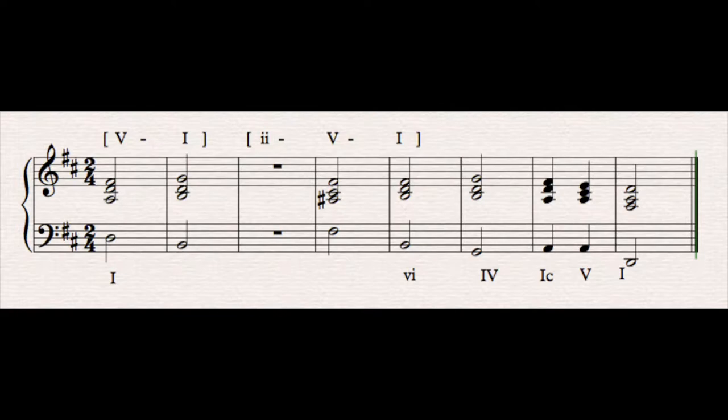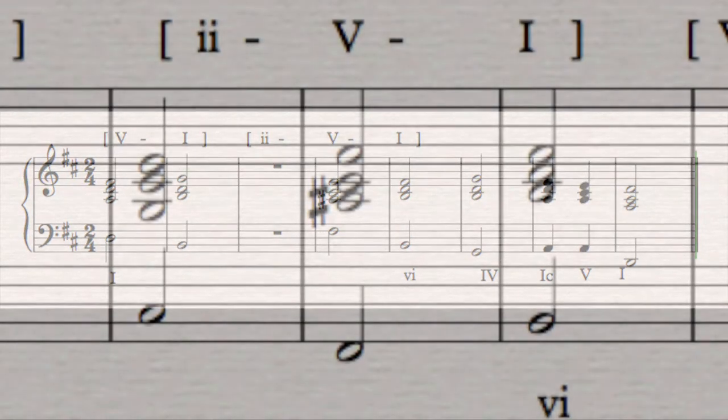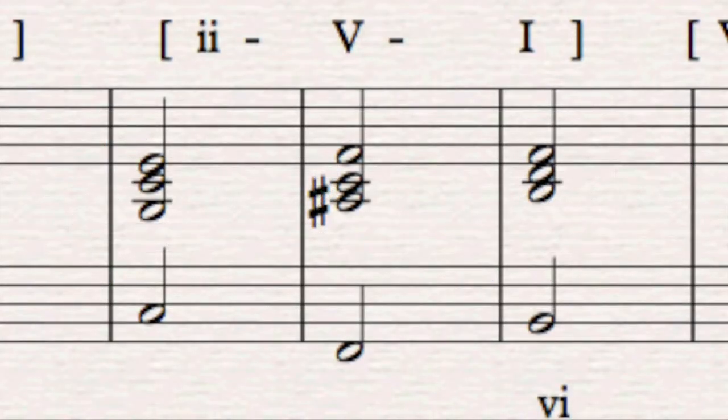Now we've already established a dominant-tonic movement in bars four to five. But if we treat bar four now as a tonic, we can precede it with a C sharp chord, a chord built on C sharp. And in this case it will be a C sharp diminished chord. So bars three, four, and five now act like a two-five-one progression in B minor. I know this is going to be tricky for some of you, but just follow it through. I think you'll get to understand that we're simply just finding opportunities within the chord progression to have some dominant-tonic movement, some chord five to chord one movement.